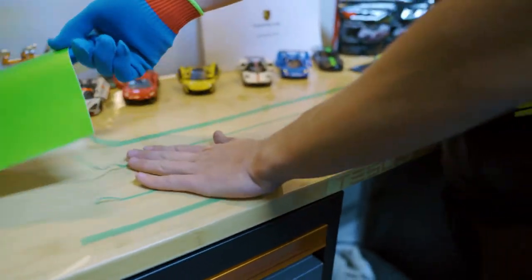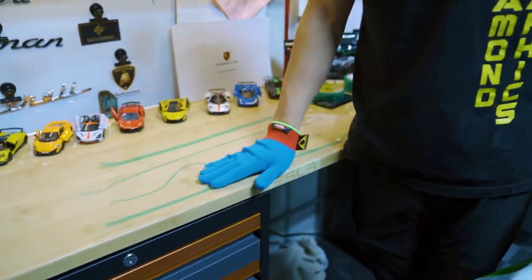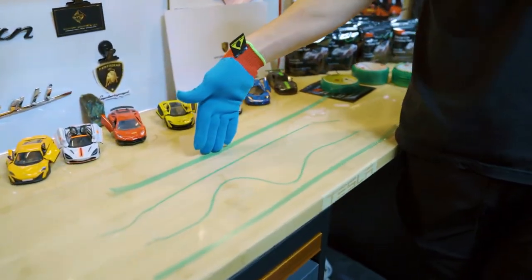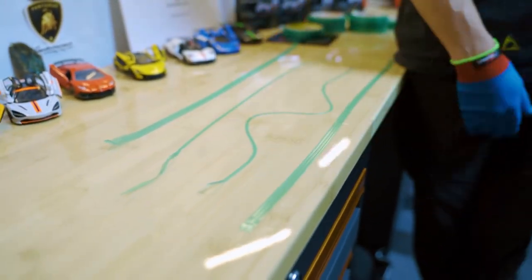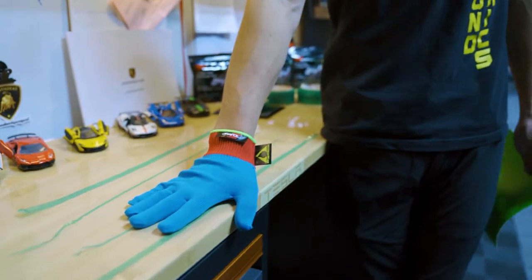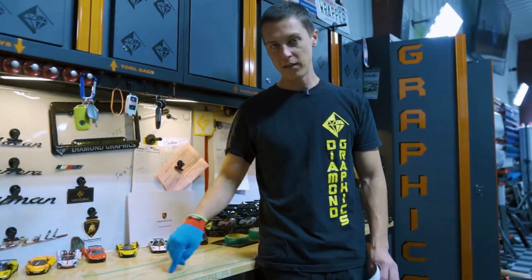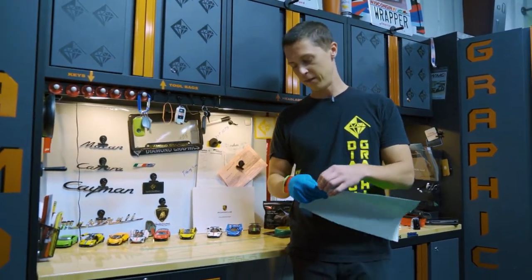So when you're applying this to a vehicle, obviously if you have to do a straight line or something, you want to make sure it's straight. If you're lining up stripes, if you're doing custom flames or something, basically you clean the vehicle, you lay the knifeless tape, and then you put the vinyl on top of it.